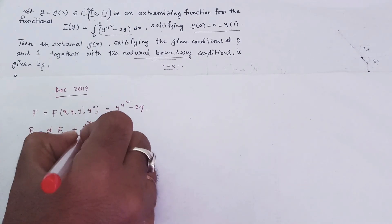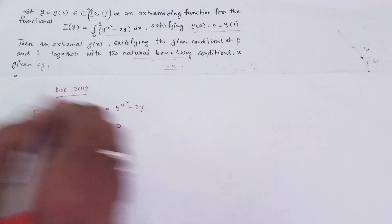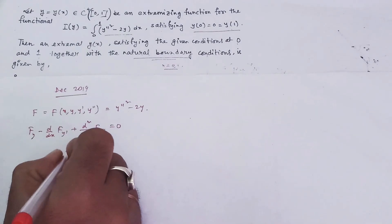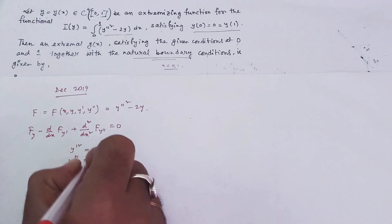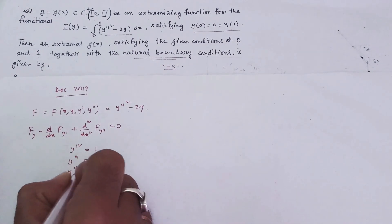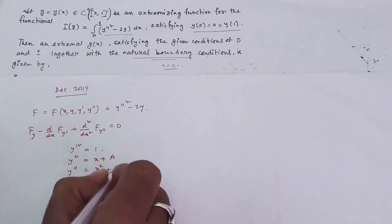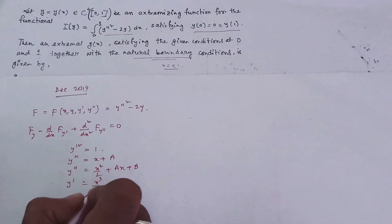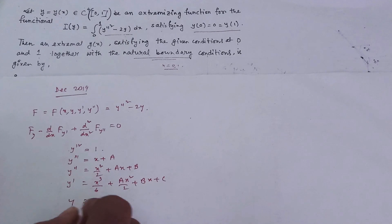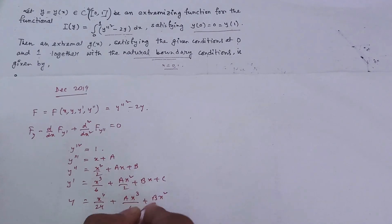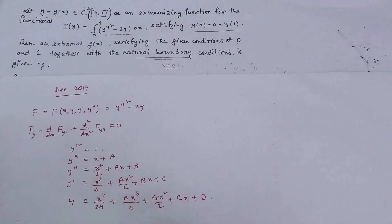If you simply solve it, then you have y''' = x + A, y'' = x²/2 + Ax + B, and proceeding further, y' = x³/6 + Ax²/2 + Bx + C, and y = x⁴/24 + Ax³/6 + Bx²/2 + Cx + D. So you have four unknowns and four conditions.